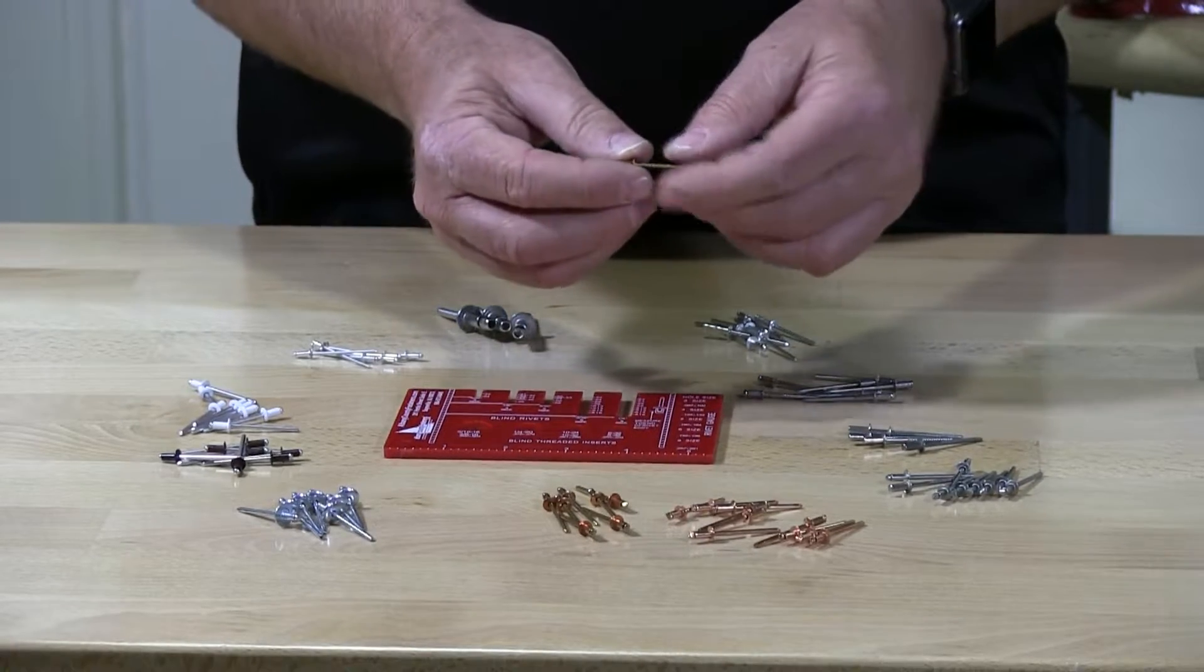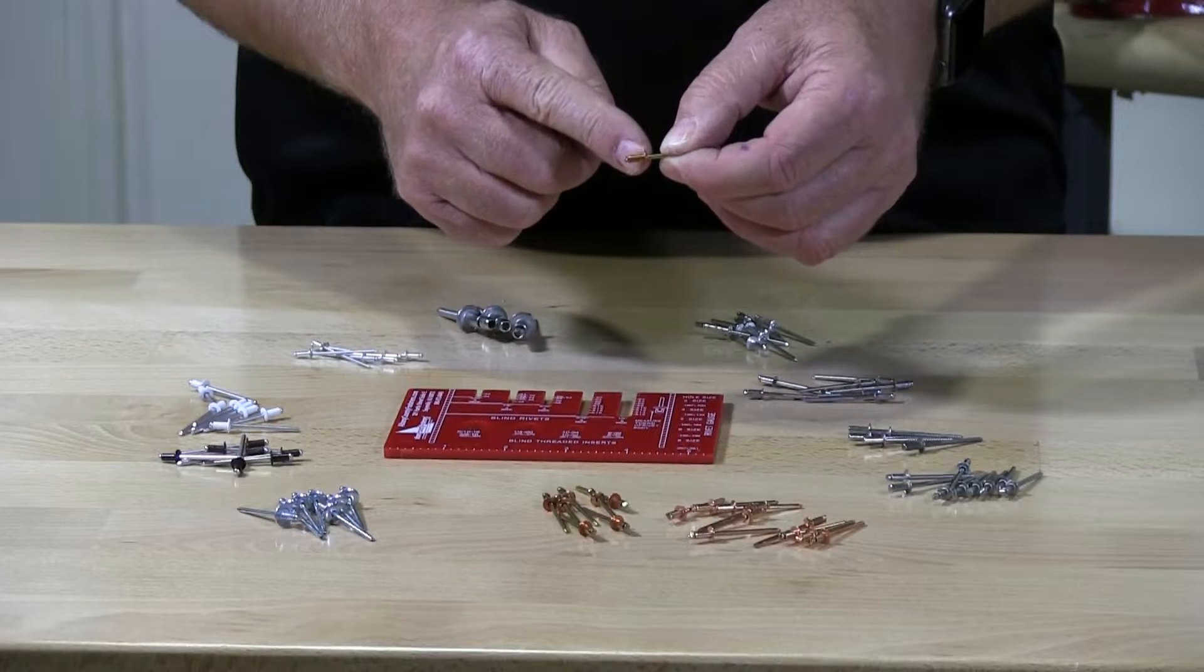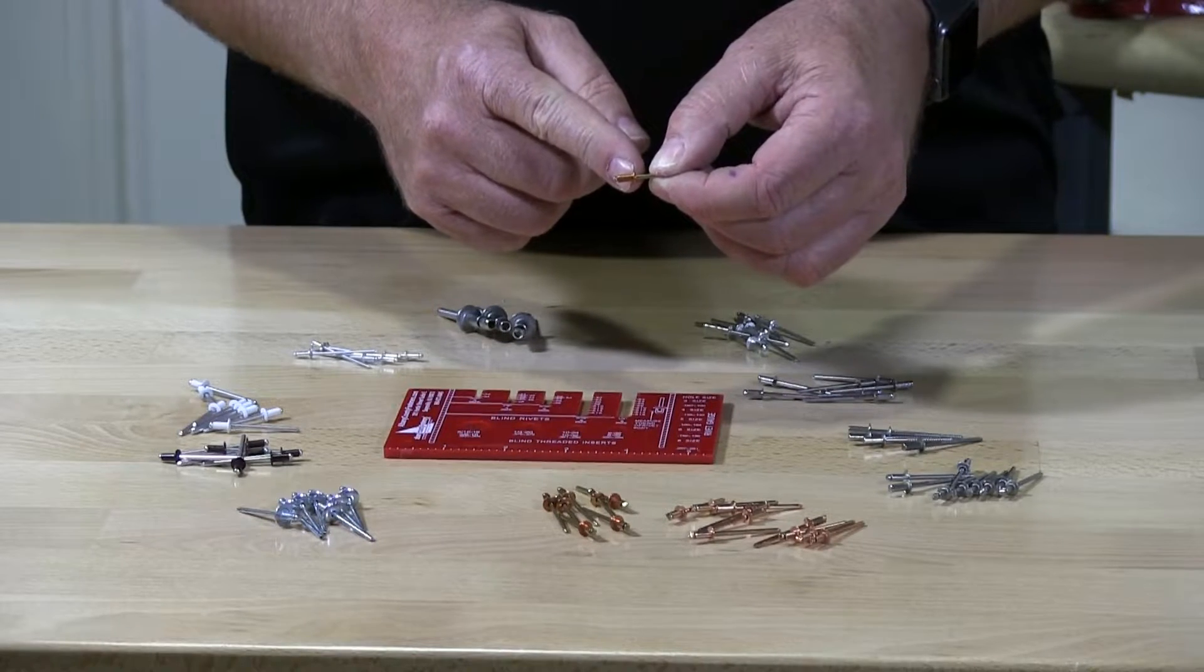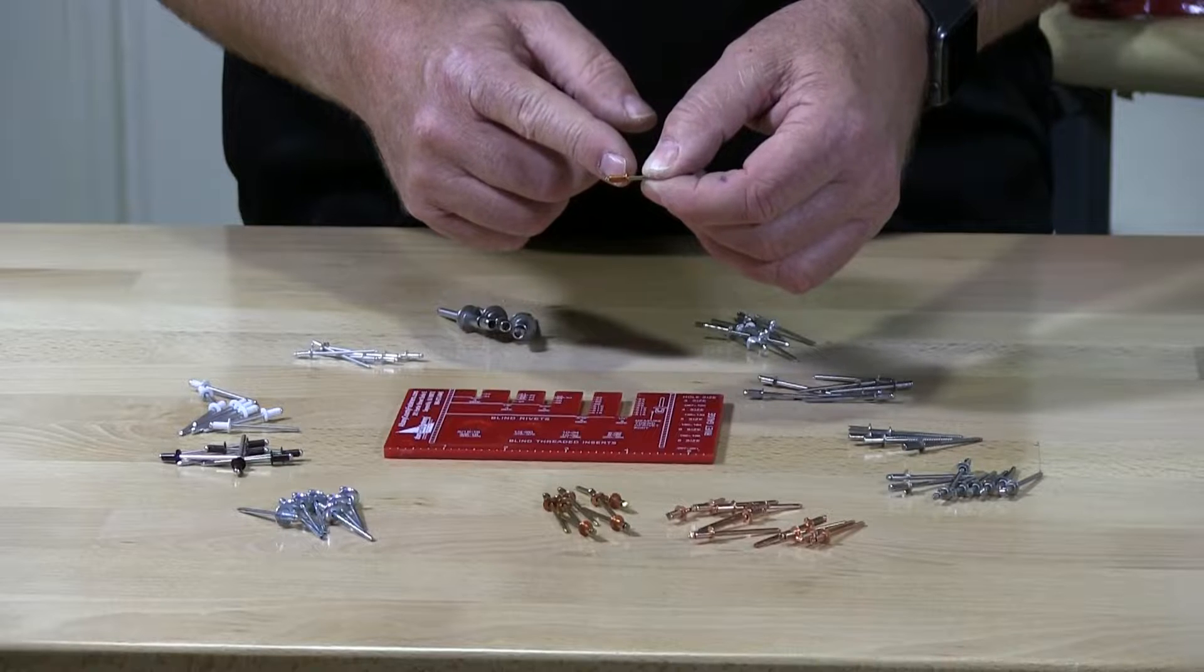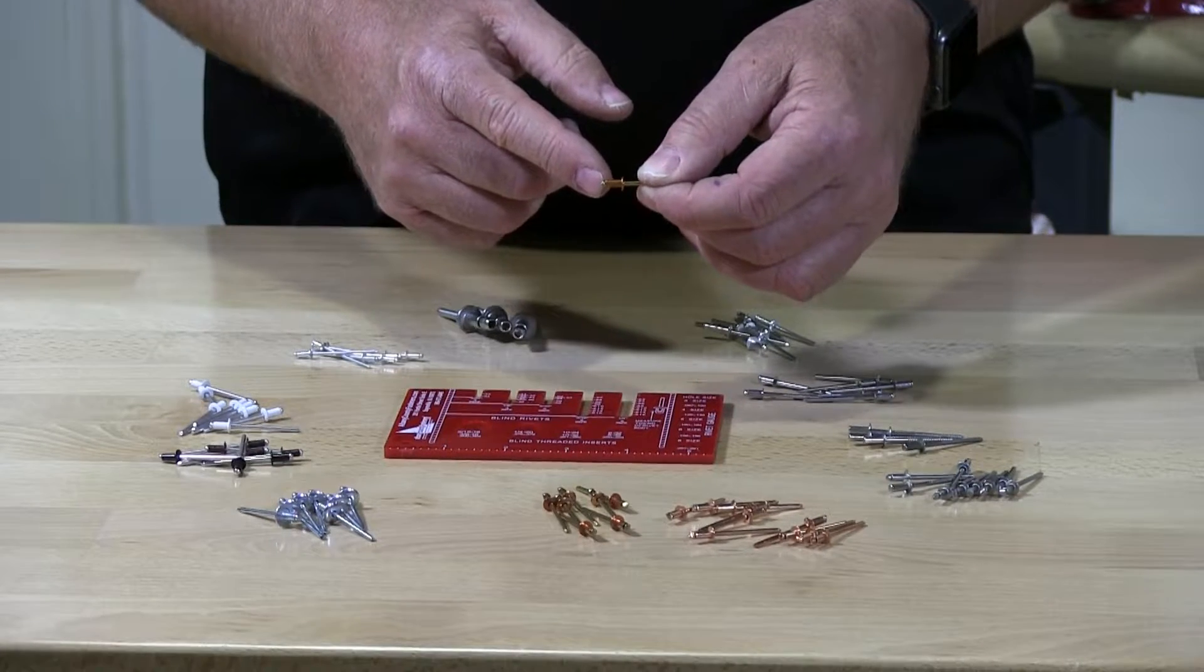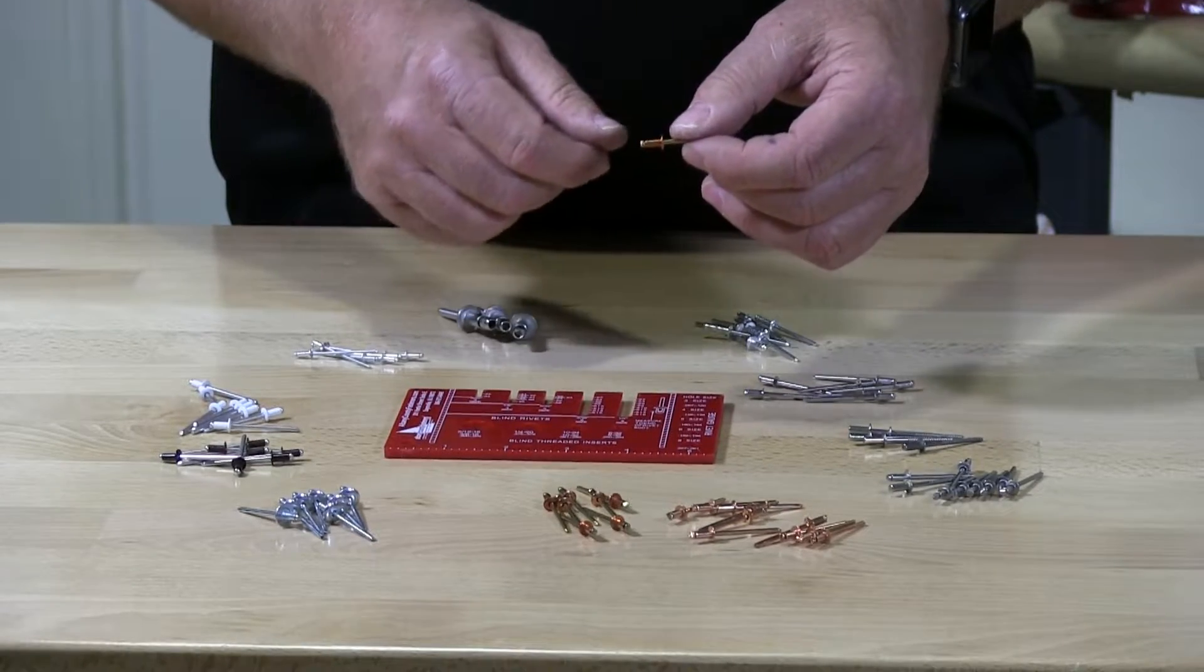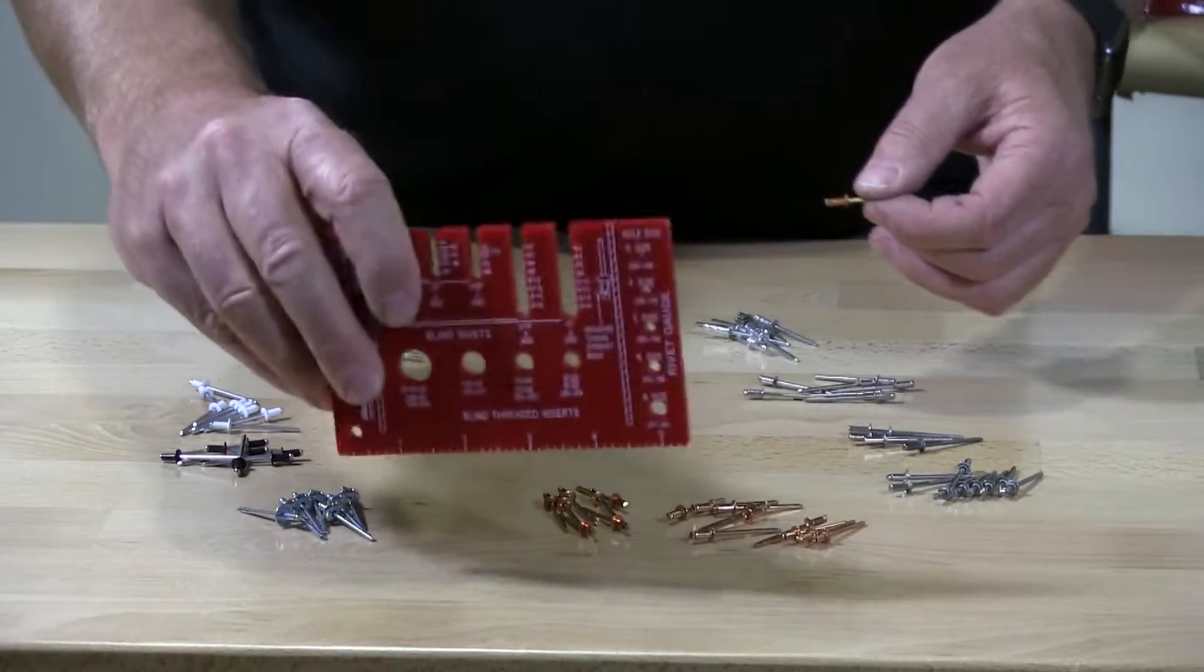When you receive your rivets, don't take a tape measure and measure from this point to this point. That's not going to be correct. You're going to find it's going to be about 1⅛ inch to 3/16ths of an inch longer than what you purchased. So the correct way would be to get one of these babies.